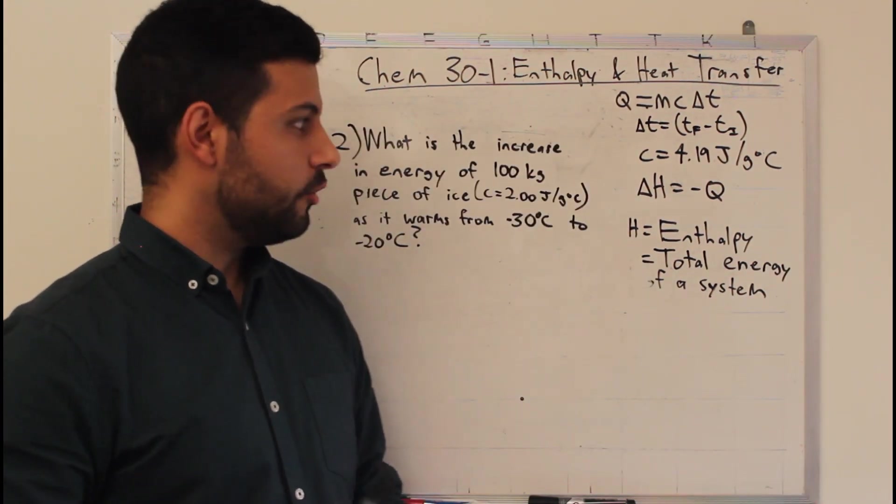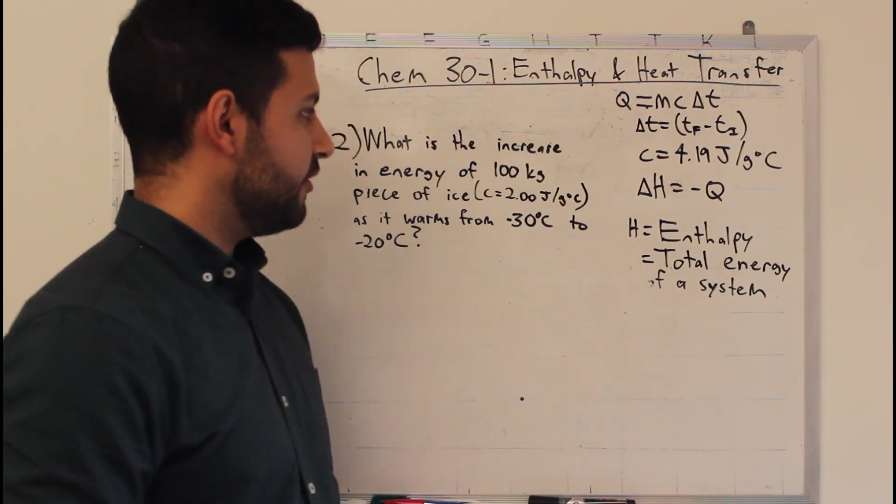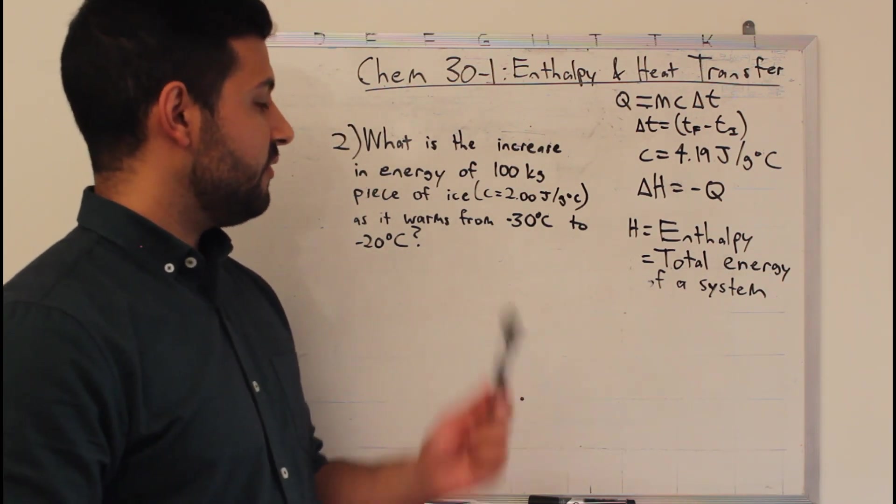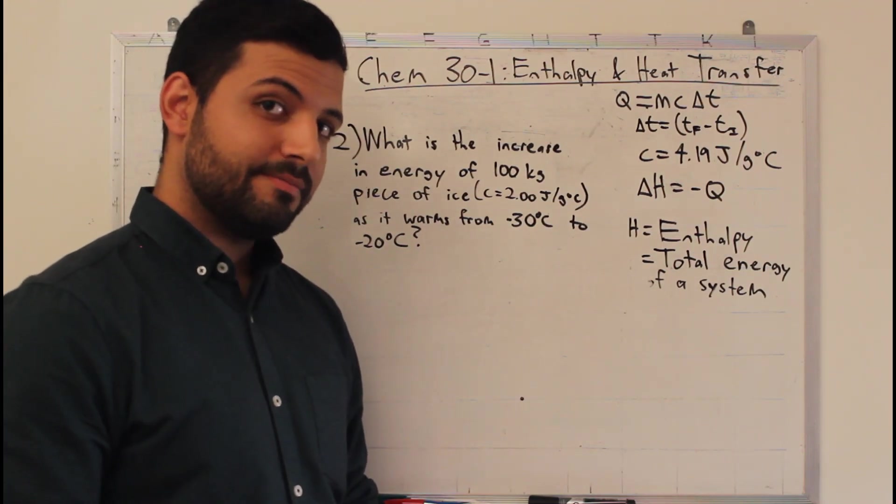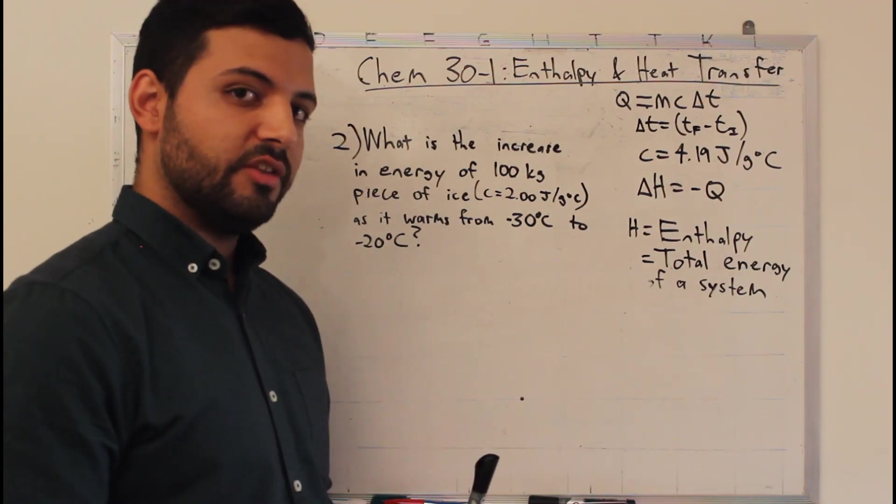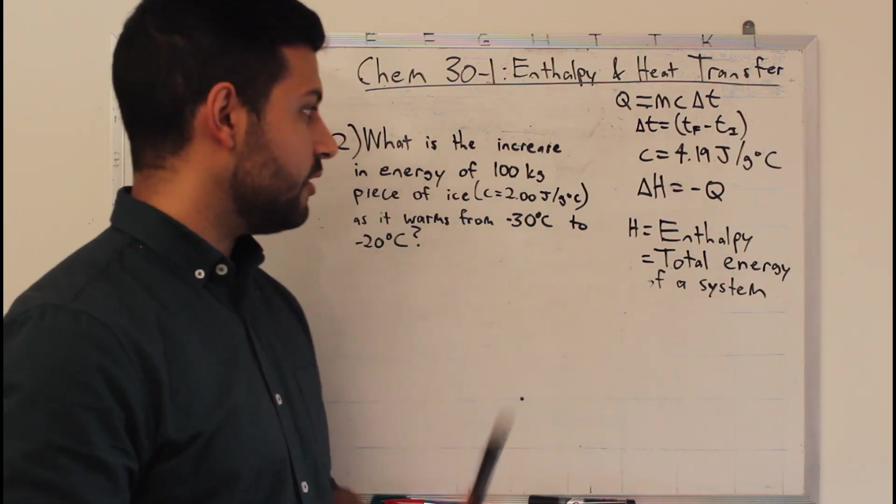In this example, we're going to do a bit more of a complex scenario, so there's a couple things to keep in mind here. The weight that they give us is in kilograms, which means we're going to have to change it to grams. And we're not dealing with water in this equation, we're dealing with solid ice, which has a different specific heat capacity, in this case, 2.